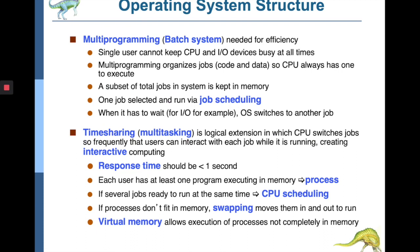The CPU is never idle. A subset of total jobs are kept in memory — we have a limited RAM and try to fill it as much as possible so that the number of operations can run simultaneously, which is called concurrency. One job is selected to run by the job scheduler, whose job is to create a queue defining how the CPU would be utilized to its maximum. Whenever a job is waiting for an I/O operation, the operating system switches to another job.